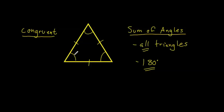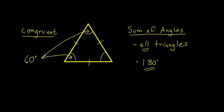In the case of an equilateral triangle, all three angles are congruent. Knowing that all three angles must add up to 180 degrees, we can easily work out that each angle is 60 degrees. This angle here is 60 degrees, this angle here is 60 degrees, and this angle here is also 60 degrees. That goes for all equilateral triangles — they are all the same.